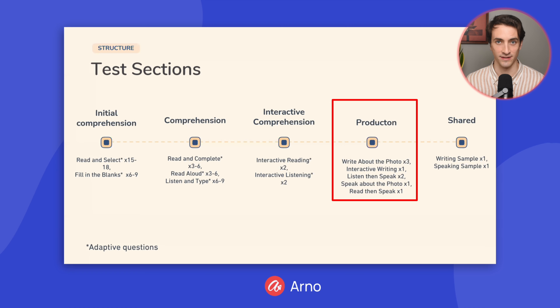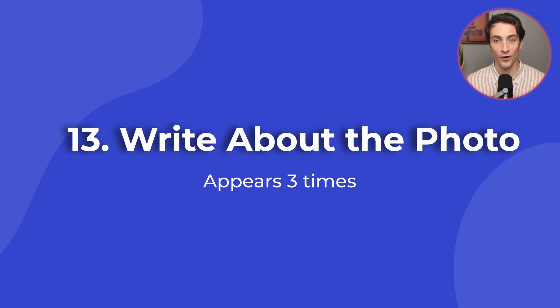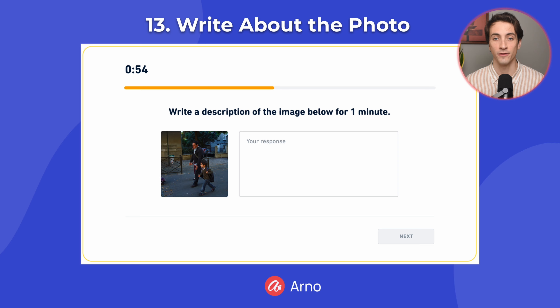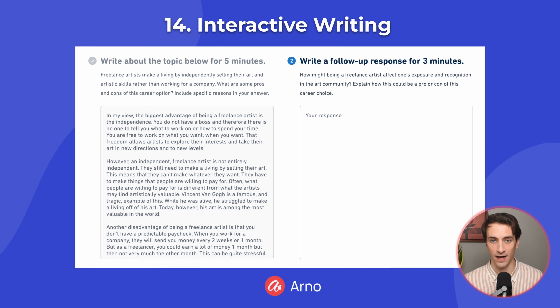The next section of the test is the Production section. These are the writing and speaking questions. By the way, you may have noticed that production has a typo — that's Duolingo's fault, not ours. You have Write About the Photo, which you will see three times. You will be given a photo, and you simply have to describe it for up to one minute. Next is Interactive Writing. This question type appears just one time. You will be given one topic, and you need to write about it for up to five minutes.